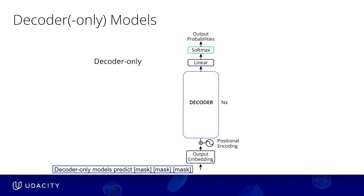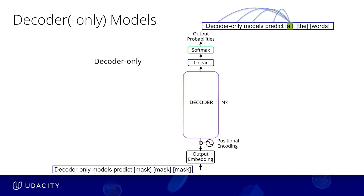Instead, the model can only attend to the tokens that have already been predicted, with all the later tokens in the sequence masked for later prediction. In this example, for the prediction of the token ALL, the LLM could attend to only the preceding words and not the subsequent ones. Also, unlike encoder-only models, decoder-only models can run prediction on 100% of the tokens of the pretraining dataset, generating each next token while attending to all the prior tokens, earning these models the distinction of being called generative models.